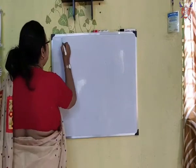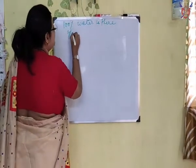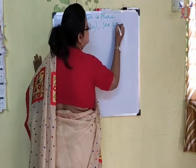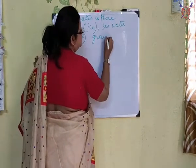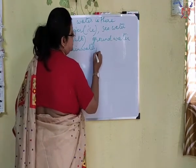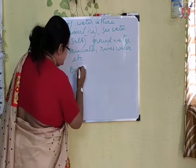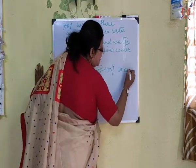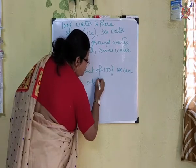Let me tell you that 100% water is there — glacier, that means ice; sea water, that means salt water; ground water; rain water; river water; and so on. But out of 100%, we can use only 1% of water.